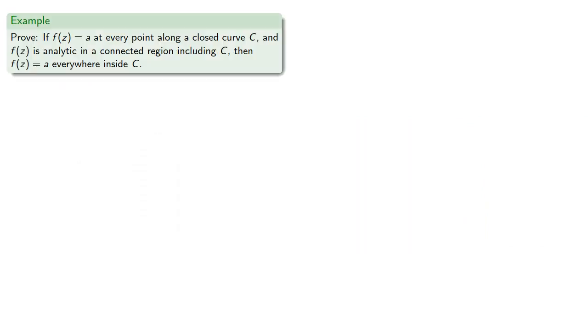So in the previous joke, I mean result, the function was 0 at every point along our closed curve. Suppose it's equal to some constant at every point along a closed curve. Then the same result applies. Otherwise, the function is equal to that constant everywhere inside our curve. And we can reduce it to the previous problem by defining a new function.